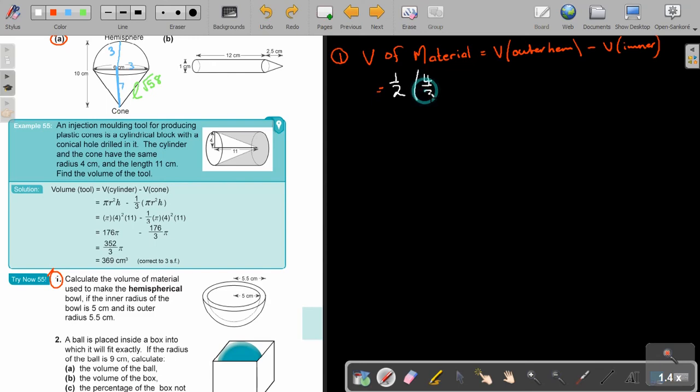It's 4 over 3 pi r to the power of 3. That is now the outside, minus half, 4 over 3 pi r to the power of 3, and that's the inside, or the inner one.